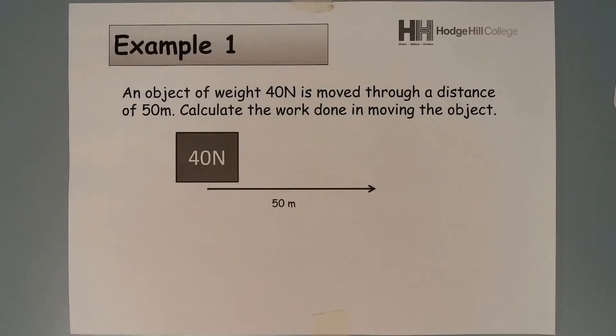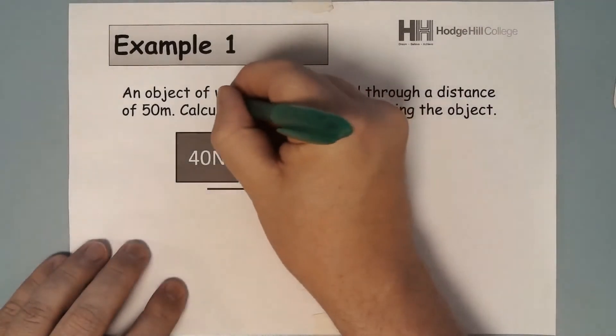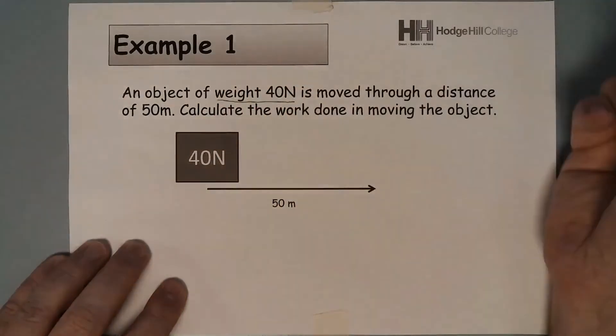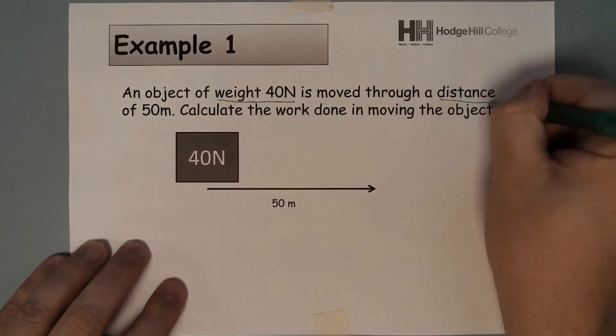Okay, so this is a question that we're going to try and work through. I've got the weight of an object is 40 Newtons. It's moved through a distance of 50 meters, and it wants me to calculate the work done moving the object.